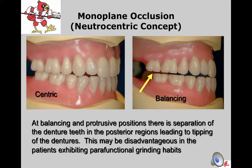With monoplane or neutrocentric occlusion, all of the teeth should be in contact when the patient is in centric relation — the lingual cusp as well as the middle groove in contact with one another. At balancing and protrusive positions, there is separation of the posterior teeth, leading to tipping of the dentures when the patient tries to incise food. This is a disadvantage of this occlusion, and particularly problematic when the patient has parafunctional grinding habits.